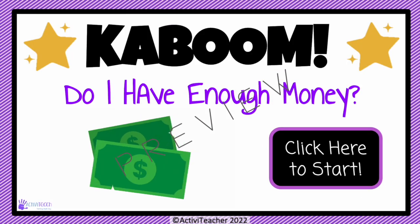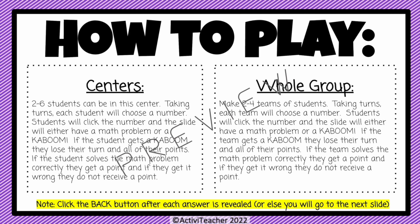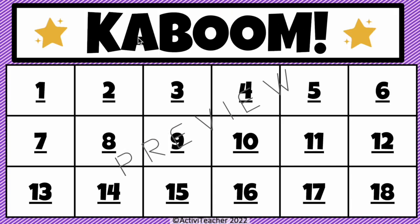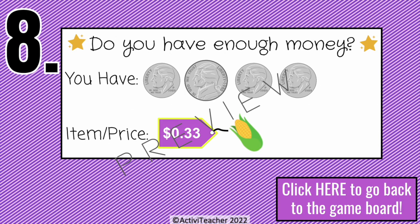Next I have a budgeting Kaboom game. You will make two to four teams of students taking turns — each team will choose a number, click it, and the slide will either show a math problem or a Kaboom. If a team gets a Kaboom, they lose their turn. If they solve the math problem correctly, they get a point; if wrong, no point. For example, if the first team picks question eight, they add up the amount and determine if they have enough money.